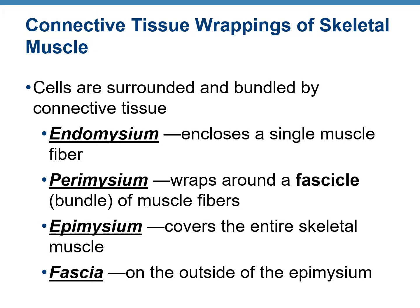Regarding connective tissue coverings of skeletal muscles: a single skeletal muscle fiber is enclosed by a membrane called endomysium. Muscle cells exist in bundles; one bundle is called a fascicle, and the covering around the fascicle is known as perimysium. Several bundles together are enclosed by an outer covering called epimysium, which covers the entire muscle. Superficial to the epimysium is another layer known as the fascia.